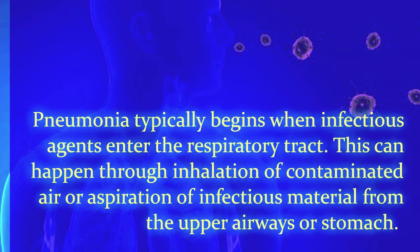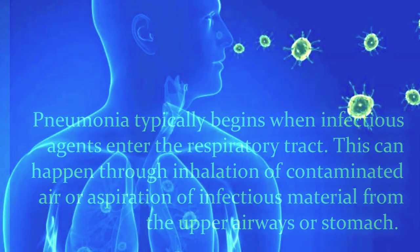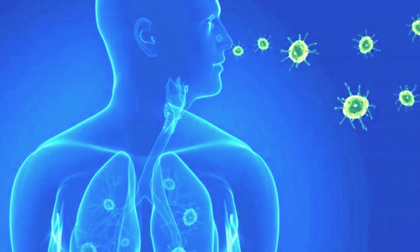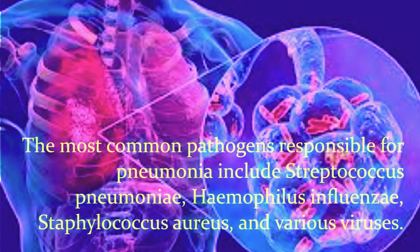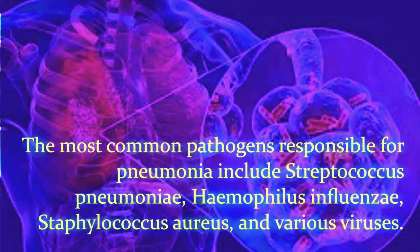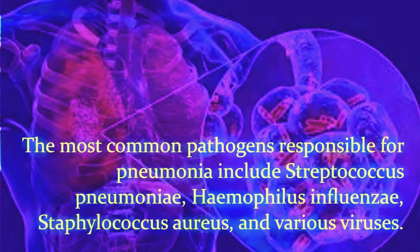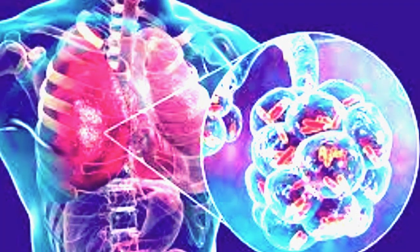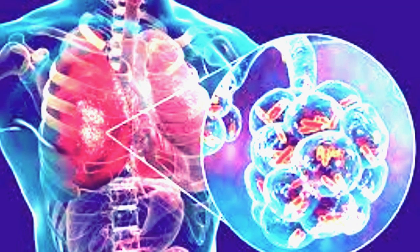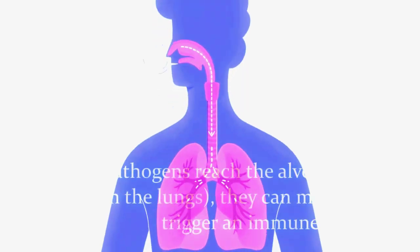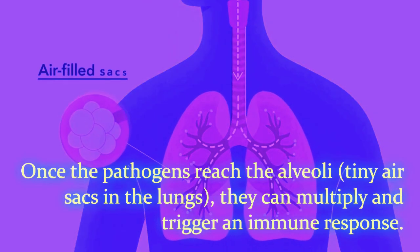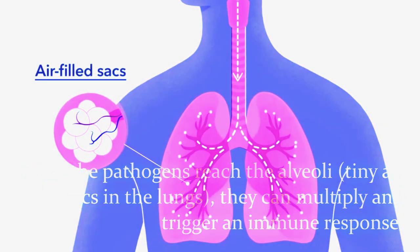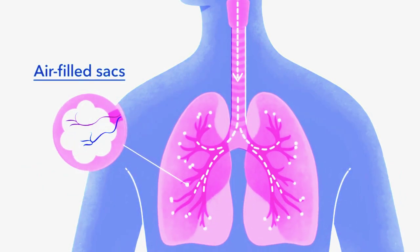The pathophysiology of pneumonia involves a complex series of events that ultimately leads to inflammation and consolidation of lung tissue. Pneumonia typically begins when infectious agents enter the respiratory tract through inhalation of contaminated air or aspiration of infectious material from the upper airways or stomach. The most common pathogens include Streptococcus pneumoniae, Haemophilus influenzae, Staphylococcus aureus, and various viruses.